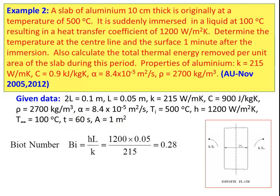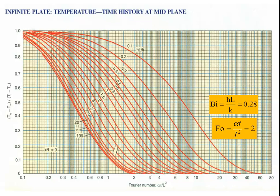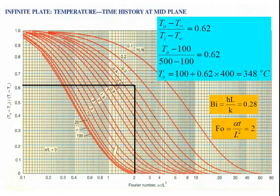Calculate the Biot number: Bi = hL/k = 1200 × 0.05 / 215 = 0.28. Fourier number: Fo = αt/L² = 8.4 × 10⁻⁵ × 60 / (0.05)² = 2. For the centerline temperature: at Fo = 2, draw a vertical line meeting Bi = 0.28, giving (T_O − T∞)/(T_i − T∞) = 0.62. So T_O − 100 / (500 − 100) = 0.62. Therefore T_O = 100 + 0.62 × 400 = 348°C. The centerline temperature is 348°C.